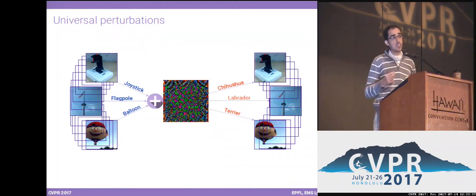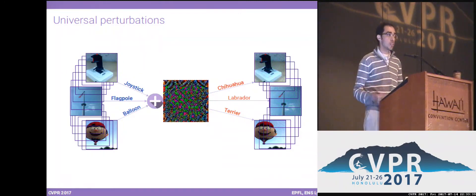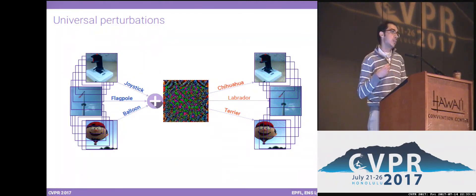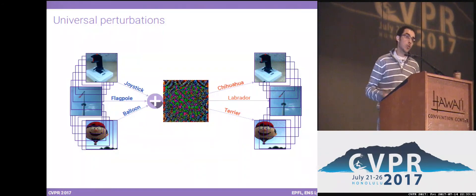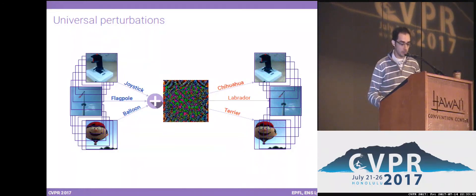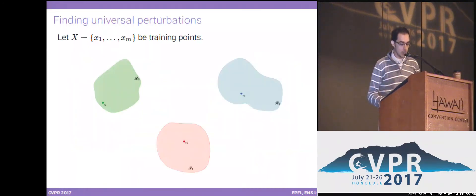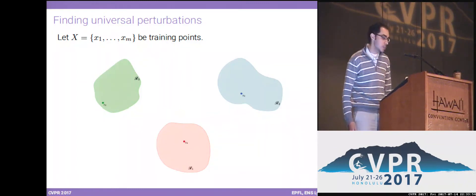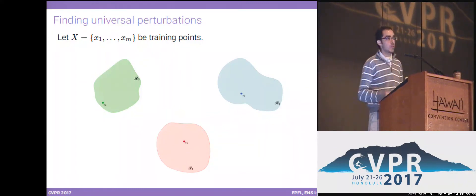As surprising as this might sound, yes, we can actually find such a perturbation — a universal perturbation that causes state-of-the-art deep neural networks to misclassify on most natural images. So let's try to see how we can actually compute such perturbations.